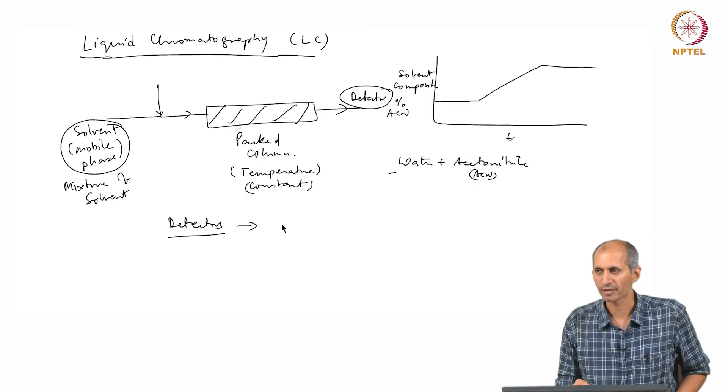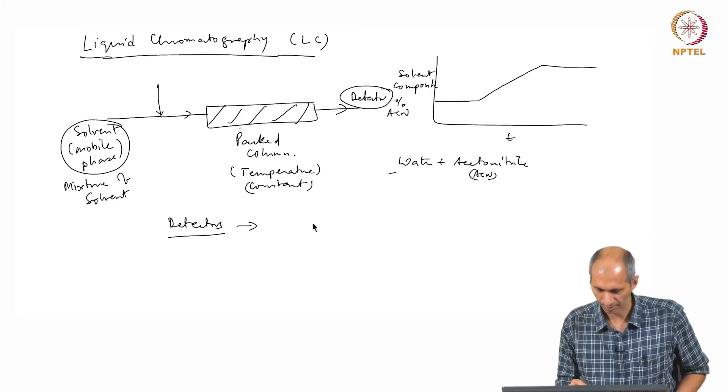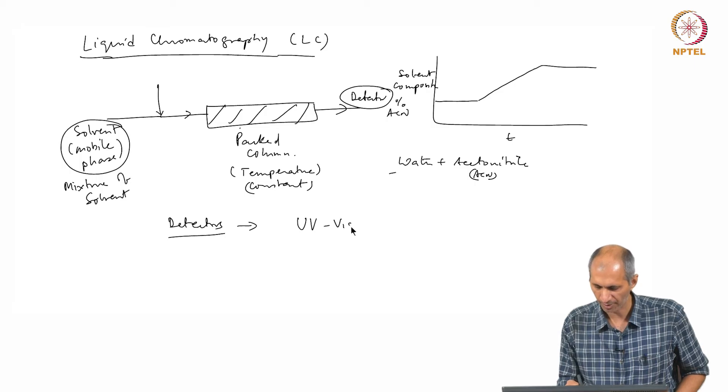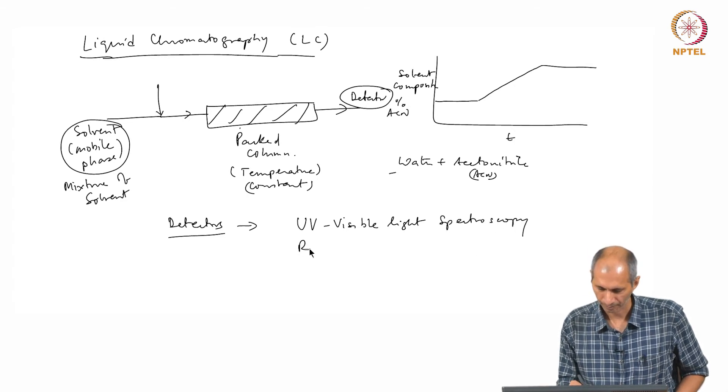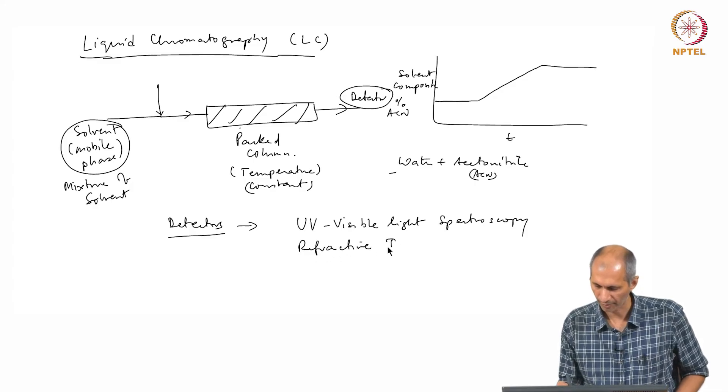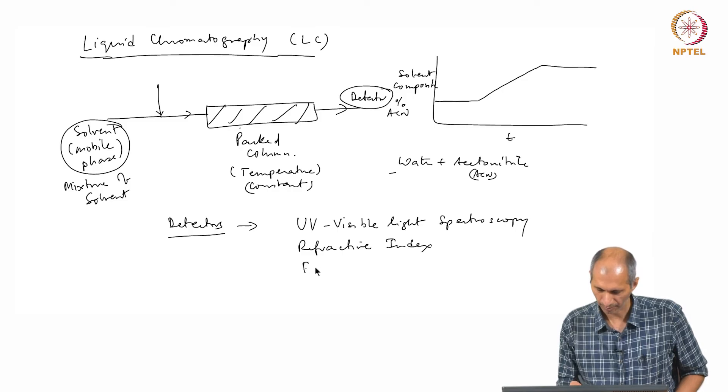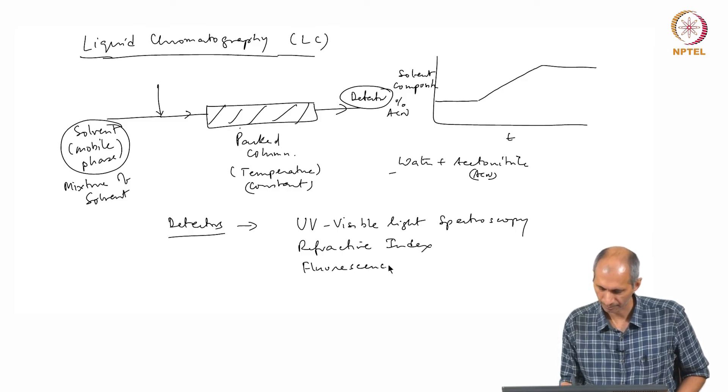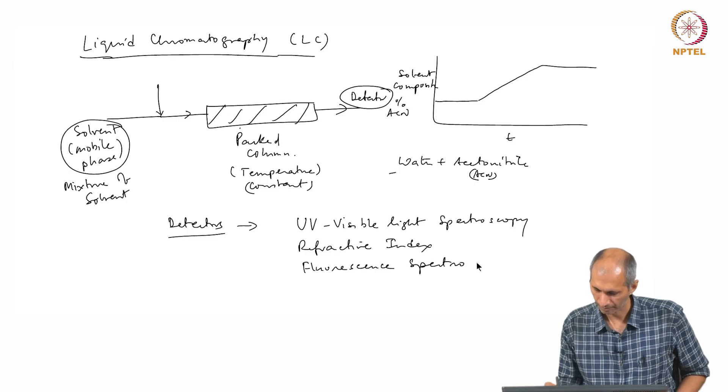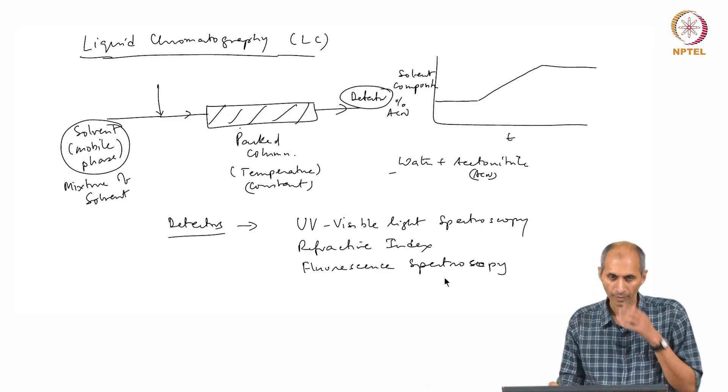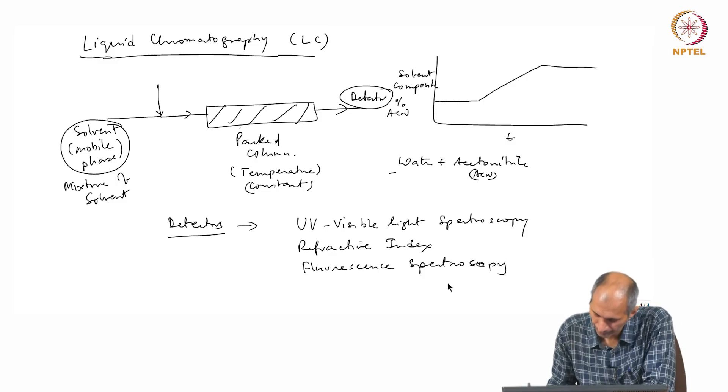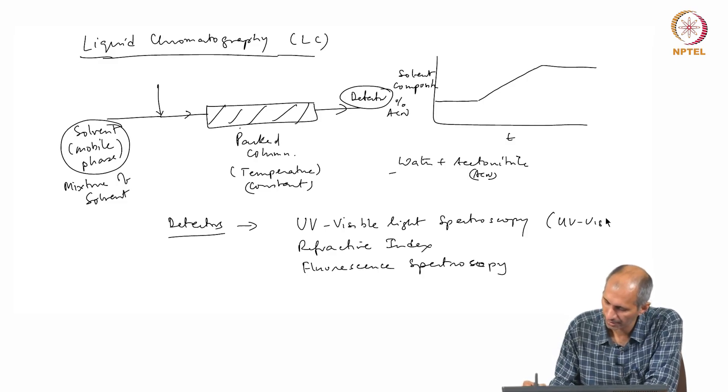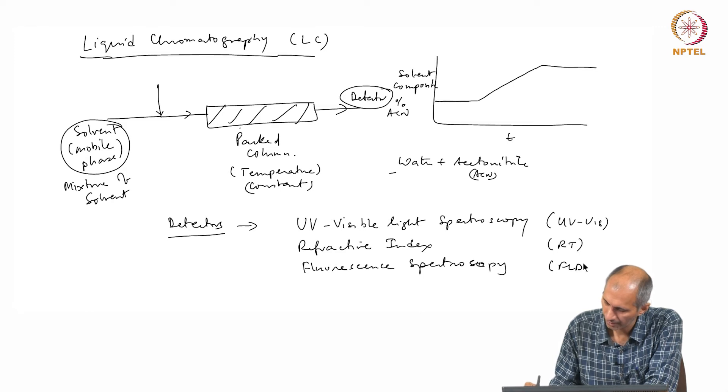The common detectors used in liquid chromatography are UV-visible spectroscopy, refractive index, and fluorescence. This is normally called UV-Vis, this is RI, fluorescent spectroscopy.